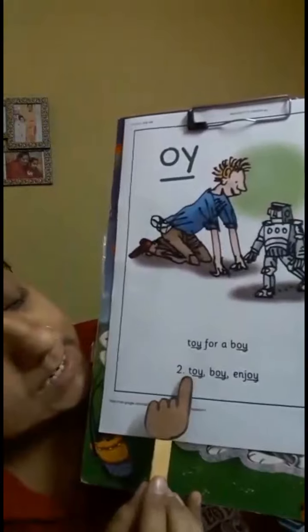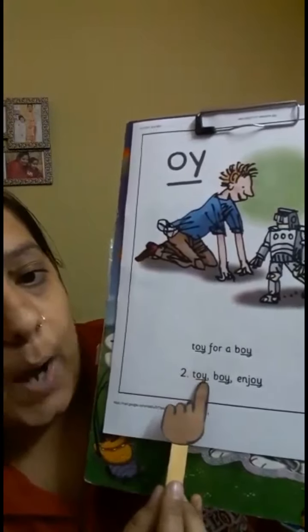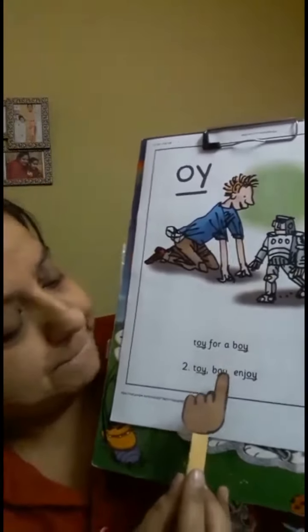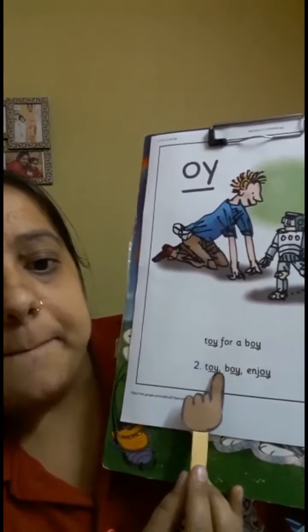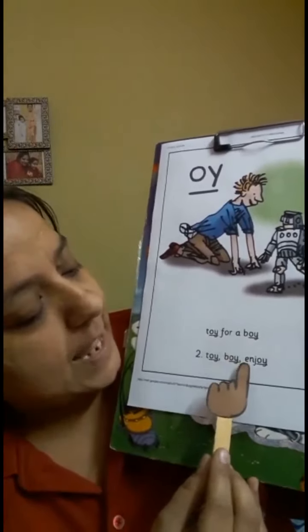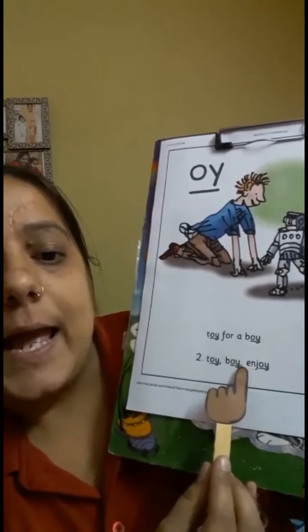Now it's time for Fred talk. Fred speaks only in sounds, so we will speak like Fred together. Are we ready? First we are going to say the sounds, and then we will say the whole word. Let's start. T-OI — Toy. B-OI — Boy. E-N-J-OI — Enjoy.